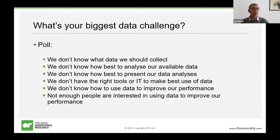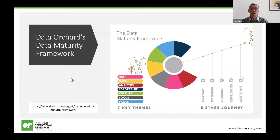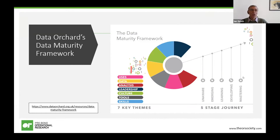For those of you in the third sector, one of my other strong recommendations would be to have a look at Data Orchard's data maturity framework and their model. This is a really great tool to help your organisation assess where you are in terms of maturity of making use of data. They have a five-stage maturity model and they look at seven key themes around the use of data and measurement and performance management. There's a free version available on that website for a very quick self-assessment, and then a more detailed version as well.